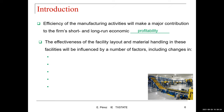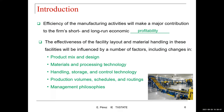The type of material handling process you use will be based on your capacity limitations in terms of money, but also on the efficiency required for your process. The effectiveness of facility layout and material handling will be influenced by factors including changes in product mix and design, materials and processing technology, handling storage and control technology, production volumes, schedules and routings, and management philosophies.